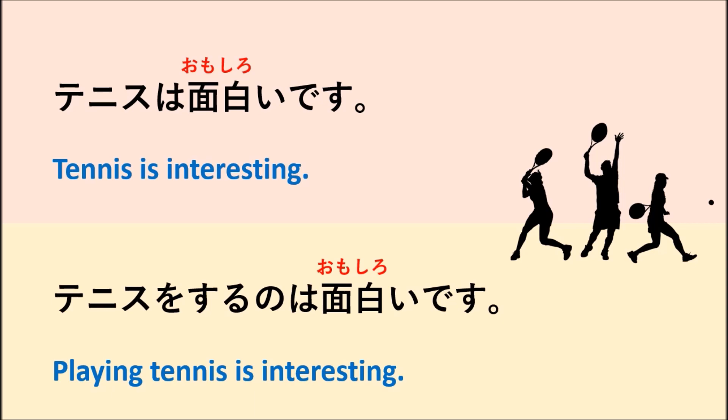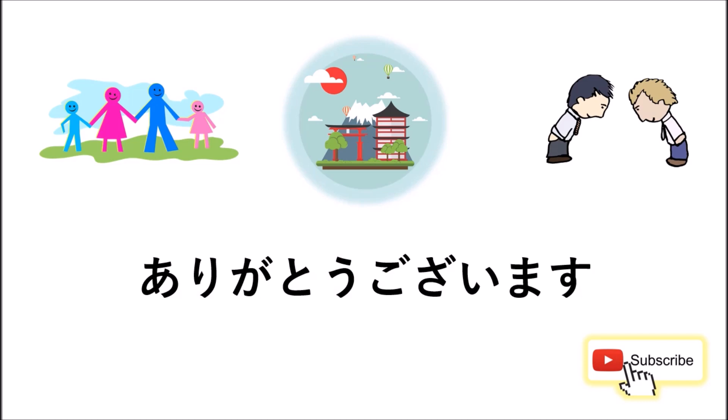To summarize: NOWA means you want to connect two small sentences together, while NOGA means you want to use an adjective to describe the first part of the sentence. That is the difference between how to use NOWA and NOGA. Thank you very much for watching. If you haven't subscribed to my channel, please subscribe. I hope to see you next time for more Japanese learning. Arigatou gozaimashita!